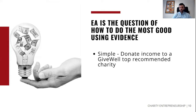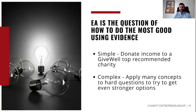So if we swing back to the original question — EA is the question of how to do the most good using evidence — there might be some simple answers. A simple answer might be to donate to a GiveWell-recommended top charity. GiveWell does in-depth charity analysis of highly evidence-based charities and comes to extremely impactful results. But the EA movement as a whole is more about digging into complex questions: how do we apply concepts to get even stronger options, what interventions are evidence-based, and how do we compare things across very different fields?